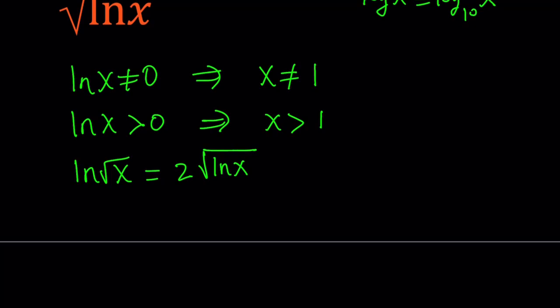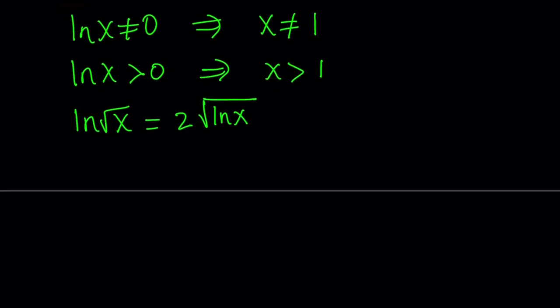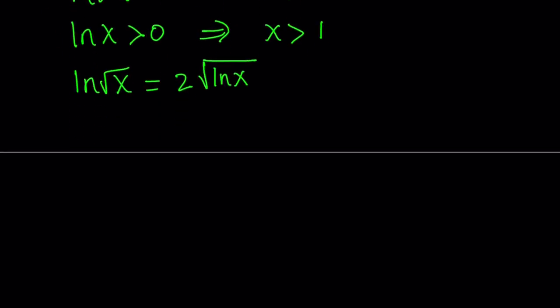So after we get to this point, we can go ahead and use properties of logs. Such as, square root of x can be written as x to the power of 1 half. So let's go ahead and do that. 2 times the square root of ln x.